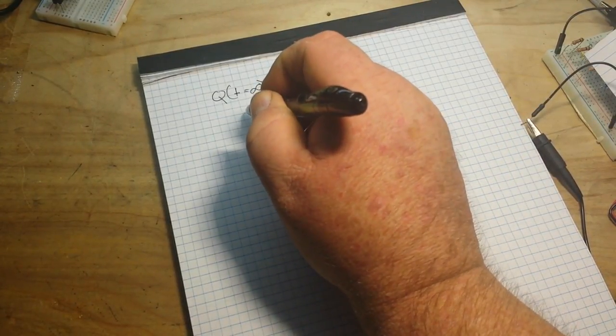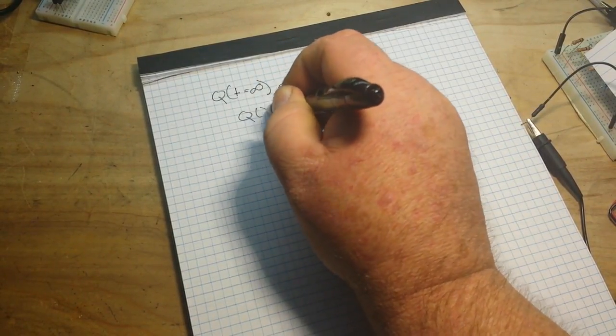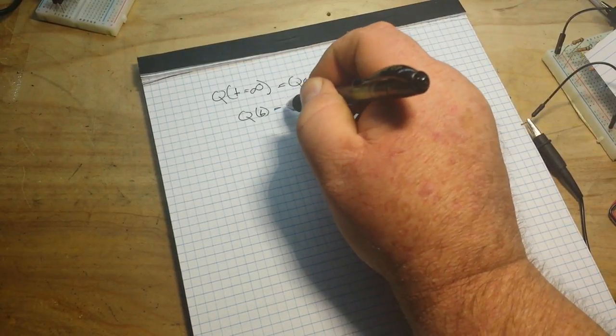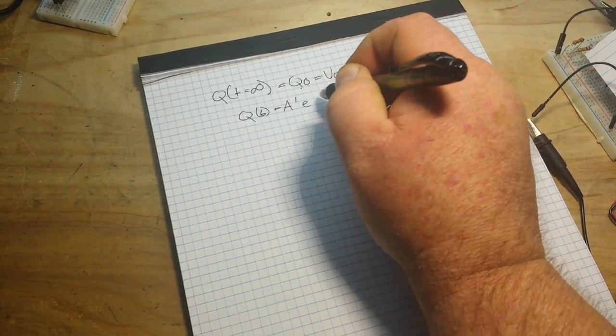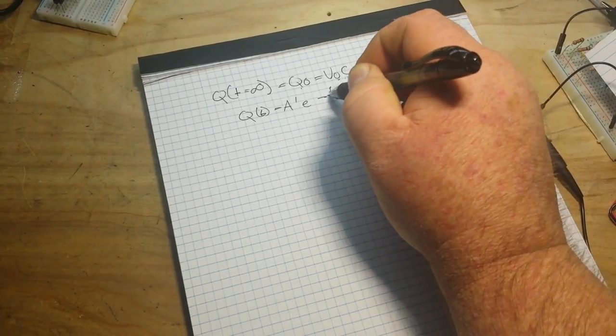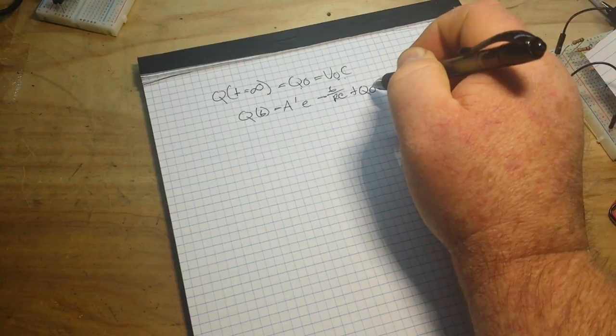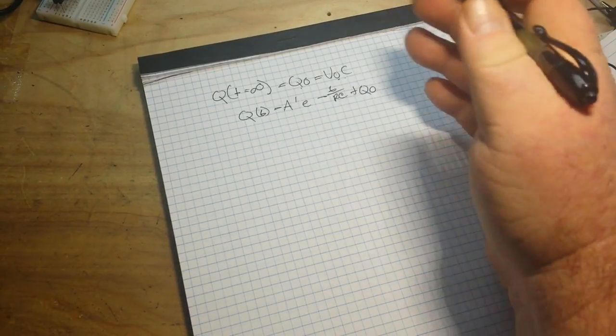And our solution to this becomes Q at T is equal to A prime E minus T over RC plus Q zero.